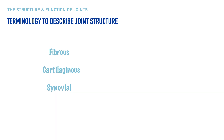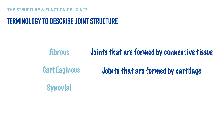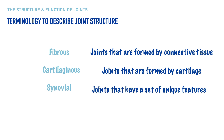Next, let's discuss the terminology used to describe joint structure. First, we have the term fibrous, which refers to joints that are connected by various types of connective tissue. Second, we have the term cartilaginous, which refers to joints that are joined together by cartilage. And third is the term synovial, which refers to a variety of joints that have a unique set of features.